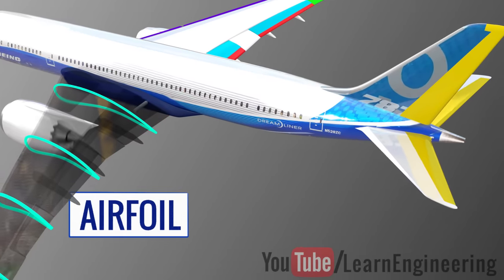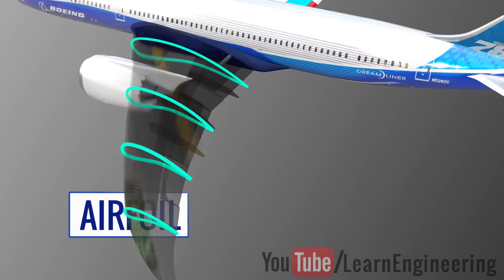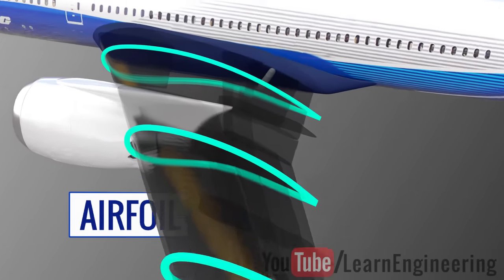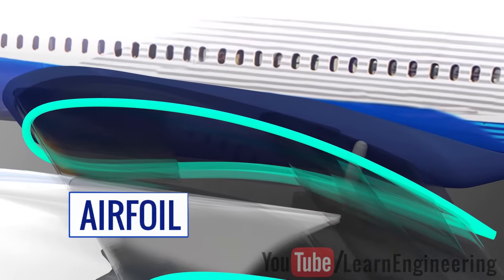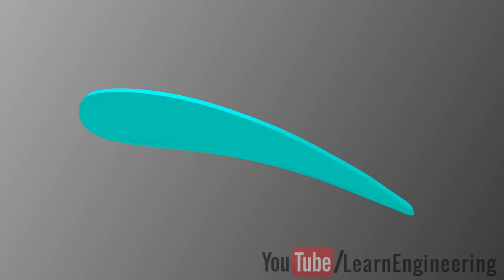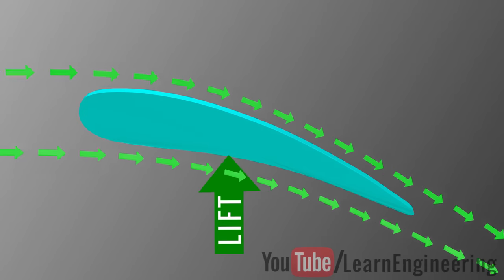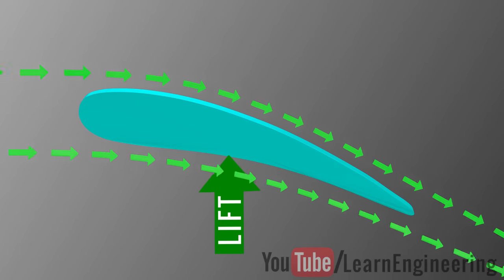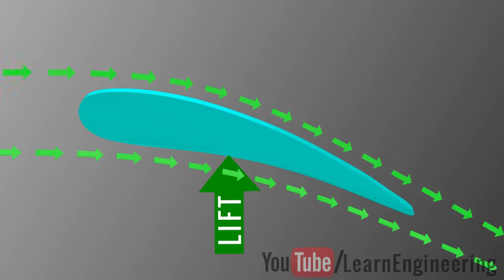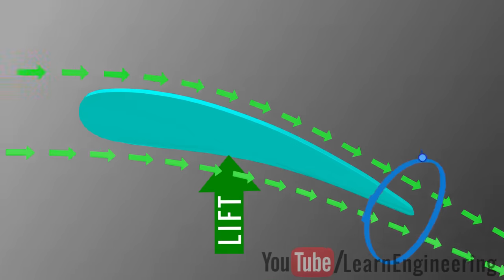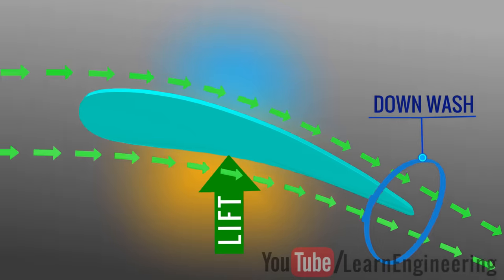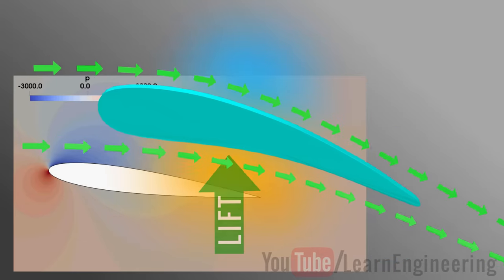Just by understanding the physics behind this simple shape, you can completely understand airplane physics. An airfoil produces a lift force when moved relative to the air, and this lift force makes an airplane fly. The airfoil produces a downwash, which causes a pressure difference at the top and bottom of the airfoil, and hence produces lift.